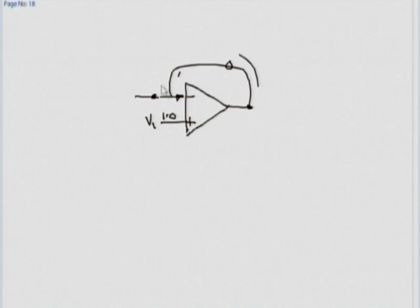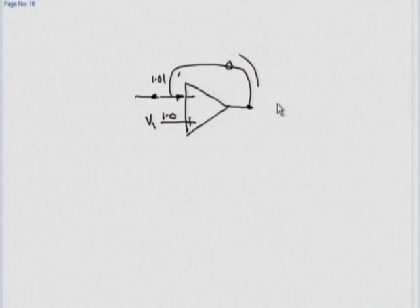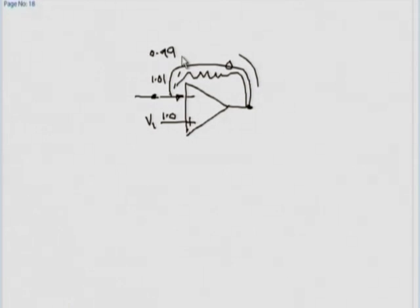Let us take a numerical example. Let us say this is 1.0 volts. Suppose this was 1.01 volts. The gain of this is very high — rather than infinite, let us take 1000 or 10000, which is typical of op amps. This means the output starts going towards minus 10 volts from 0. Because it is connected through negative feedback, as the output starts going towards large negative values, it pulls this voltage down through some network, until this point reaches exactly 1.0 volts. Once it reaches 1.0 volts, the output is 0 and there is no need to pull it down any further.